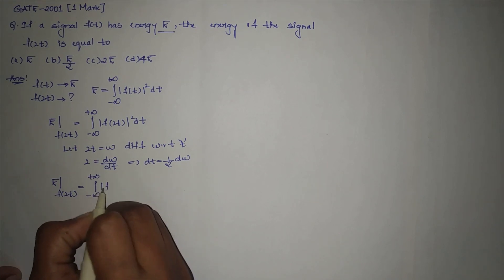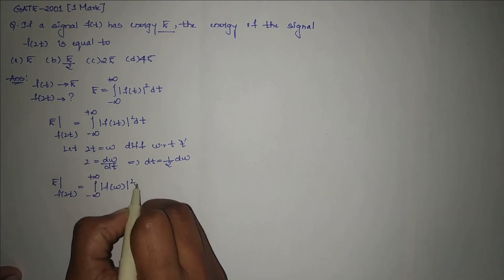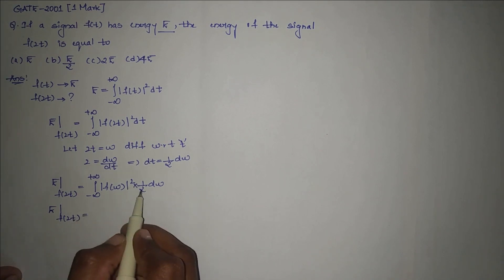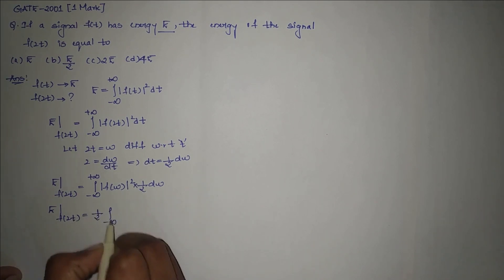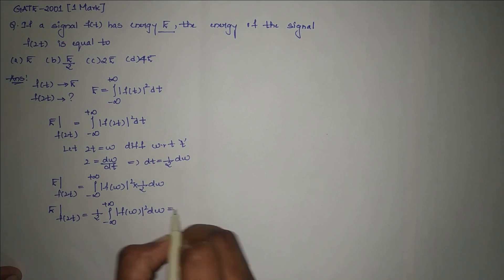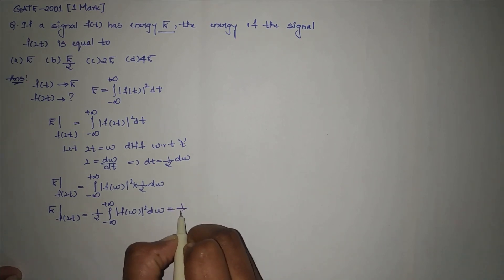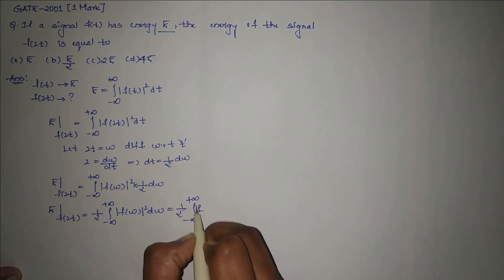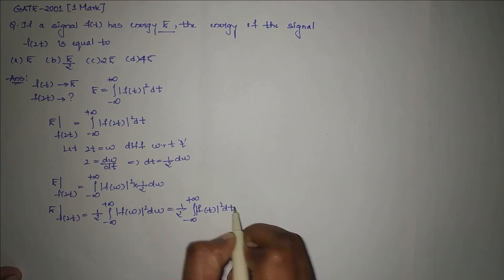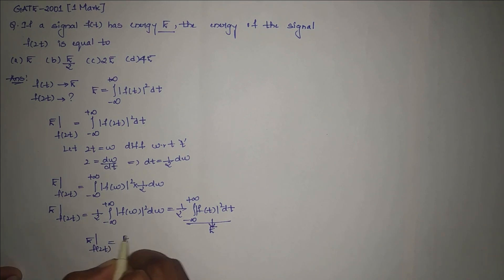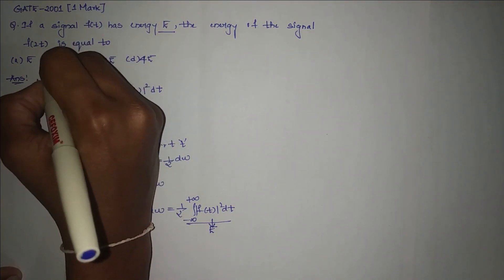The energy of signal f(2t) equals (1/2) taken outside the integration from minus infinity to plus infinity of mod f(W) whole square dW. Replacing W with t, this becomes (1/2) times integration from minus infinity to plus infinity of mod f(t) whole square dt. This value is e. Therefore, the energy of signal f(2t) is equal to e/2, so option B is the correct answer.